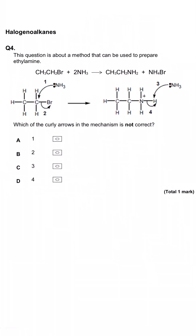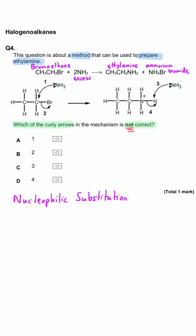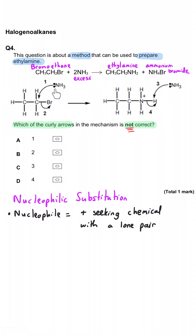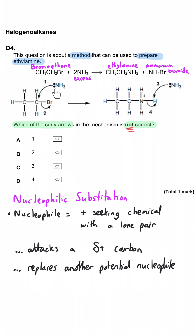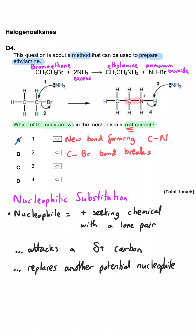This question is about preparing ethylamine: bromoethane reacts with two ammonias to make ethylamine and ammonium bromide. Which curly arrow in the mechanism is not correct? This is a nucleophilic substitution reaction. Arrow one — a new bond forming between the lone pair on nitrogen and the electron-deficient carbon — is correctly drawn. Arrow two — the C–Br bond breaking with bromine taking both electrons — is also correct.